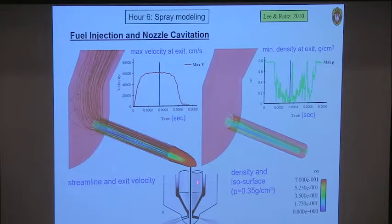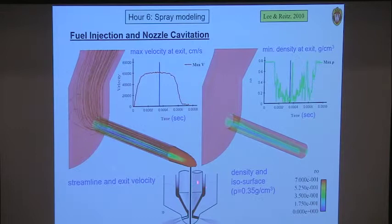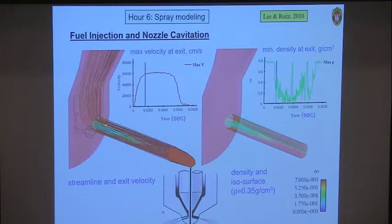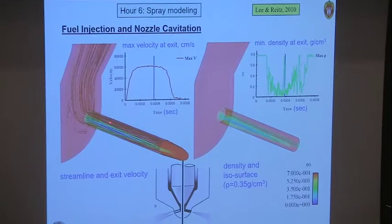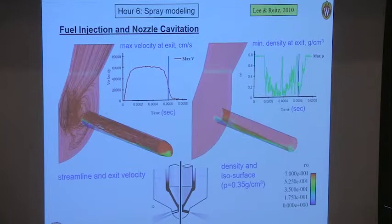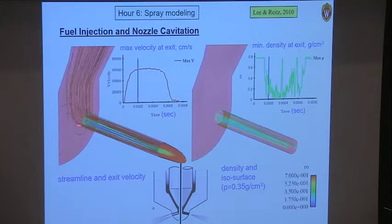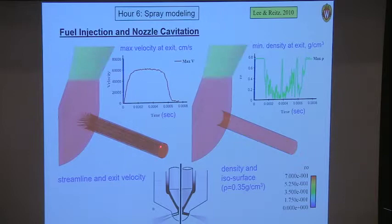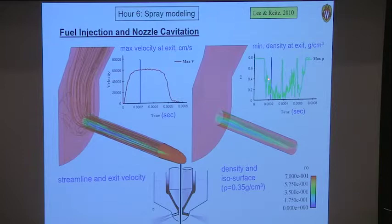Let's look at nozzle cavitation. Here's a typical injector nozzle: a needle lifts and pressurized liquid is squirted through holes. We can simulate this — you can see the needle moving, flow passing through the sac region of the injector and through the injector passage. Flow separation from surfaces leads to cavitation. The colors represent density, so blue regions have relatively low density. From this simulation you can estimate the average velocity across the nozzle cross-section at the exit, and also details about the density of the flow.